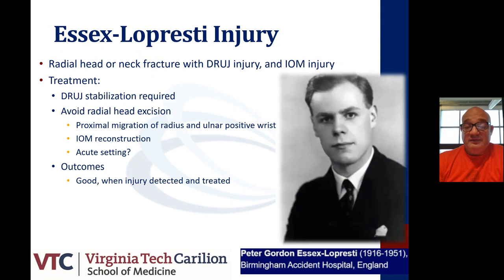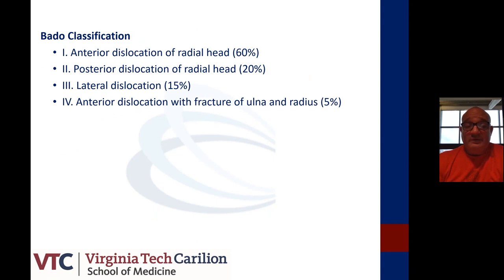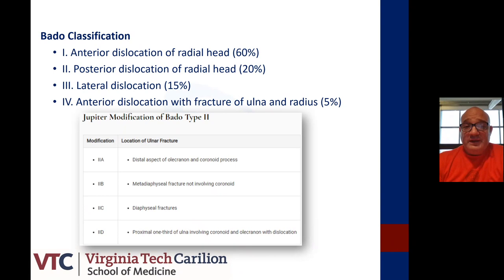The Monteggia fracture is a fracture of the proximal ulna with dislocation of the proximal radius, specifically of the radial head. On X-rays, the radial head should line up with the capitellum in all views. Bado classified these as anterior dislocation (most common), but you may also have posterior dislocation, lateral dislocation, or an anterior dislocation with fracture of the ulna and radius. Dr. Jupiter and his group modified the Bado type 2 classification, as these tend to be bad actors — specifically posterior dislocations involving fracture of the olecranon or coronoid process.